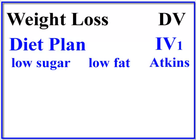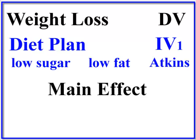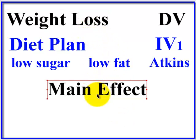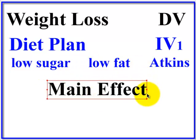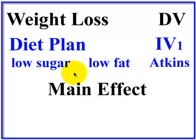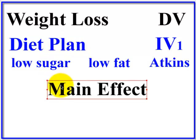Random assignment is always important. So in itself, we can run a one-way ANOVA. If there was a significant difference somewhere between these diet plans, that would be called the main effect of the diet plan, or the main effect of IV1.